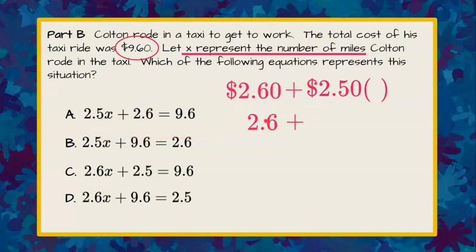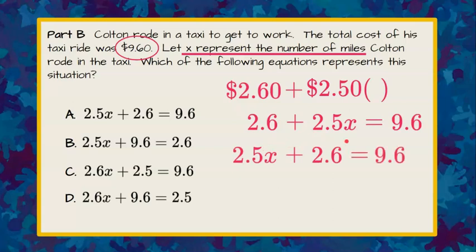$2.60 mathematically will be 2.6. $2.50 is going to be 2.5 and we're going to multiply that by the X miles that he went and it all equals 9.6. But understanding addition, the order doesn't matter, so by the commutative property I can flip these around. 2.5X plus 2.6 will equal 9.6. Now let's see if any of them match and there you see it matches A.